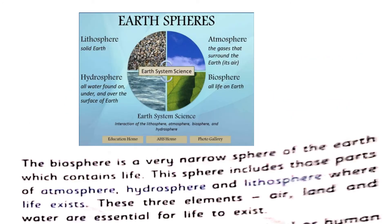Now, we have biosphere. Biosphere is a very narrow sphere of Earth which contains life. Biosphere means a zone or sphere of Earth which contains life. This sphere includes those parts of the atmosphere, hydrosphere and lithosphere where life exists. Wherever there is life — whether it is in air, water or land — that will be your biosphere.